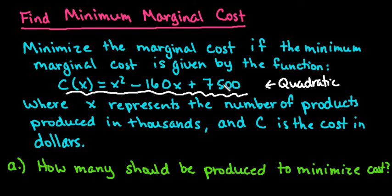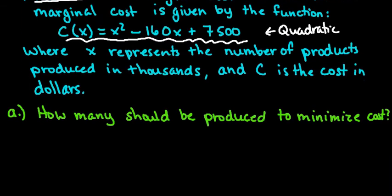If you have a quadratic function and it asks you to minimize the cost of something, you're going to find the x-coordinate of the vertex. The x-coordinate of the vertex can be found by doing negative b over 2a. This is an application problem of finding the vertex, which gives us the coordinates of the minimum point of our parabola.